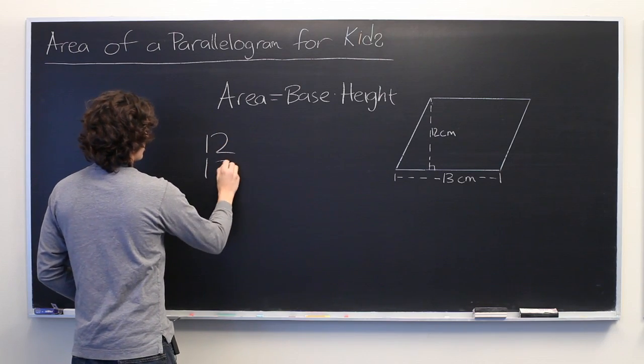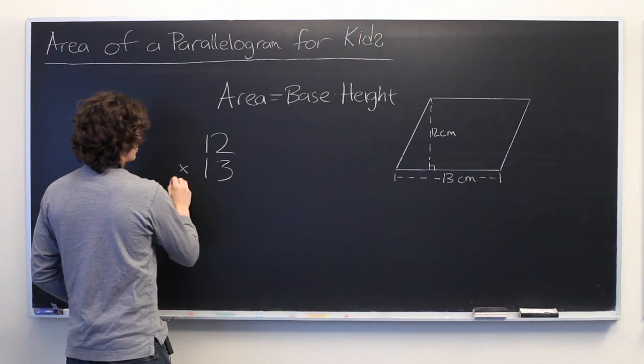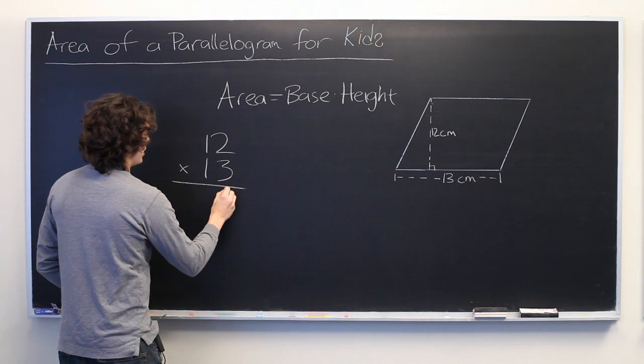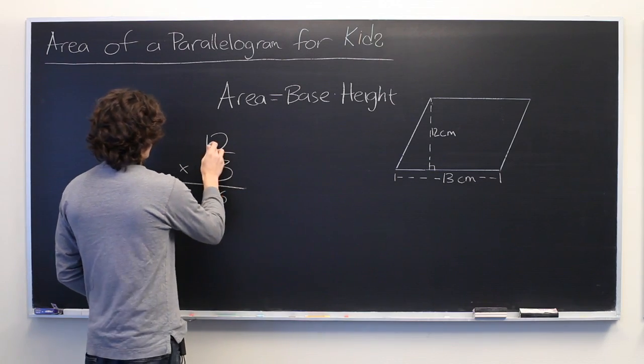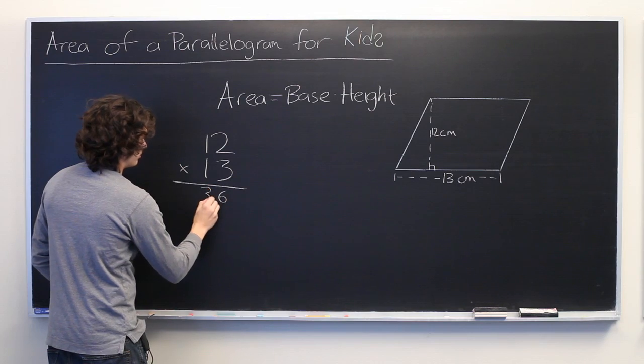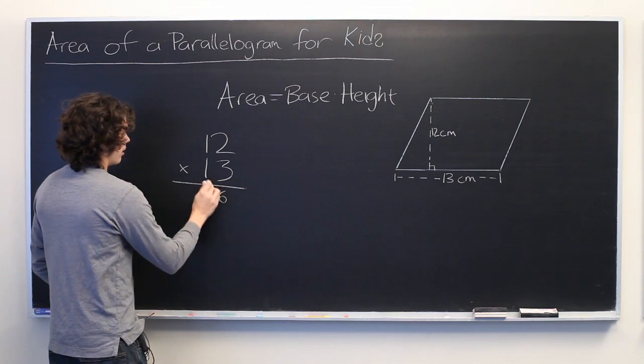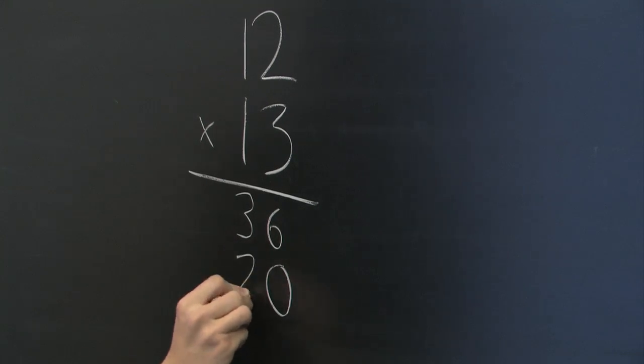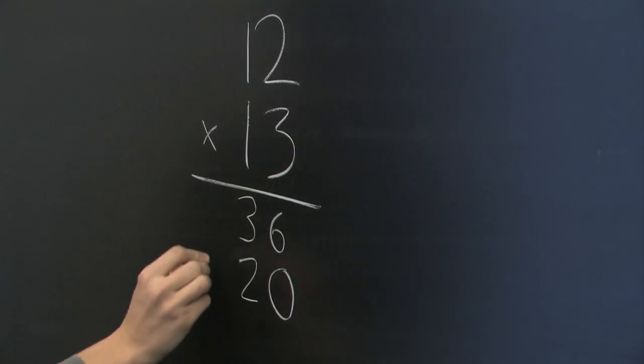12 times 13. So, 3 times 2 is 6. 3 times 1 is 3. Now, we're going to add a 0. 1 times 2 is 2. 1 times 1 is 1.